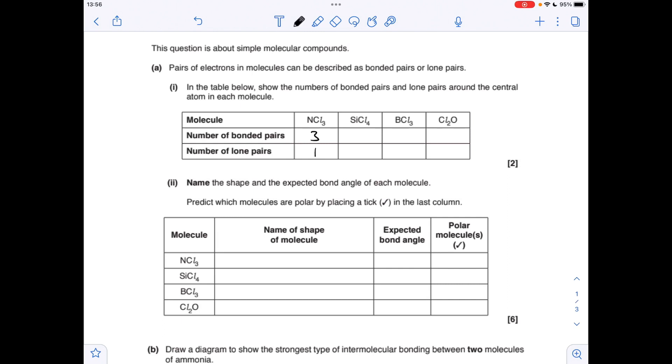Silicon's in group 4 and it's forming four bonds, so it's four bonding pairs and no lone pairs. BCl3—boron is in group 3, making three bonds, so you've got three bonding pairs and no lone pairs.